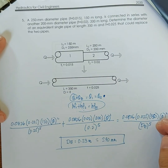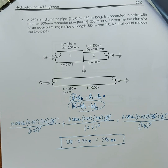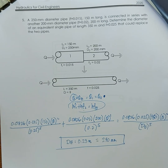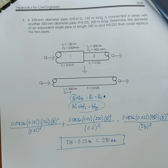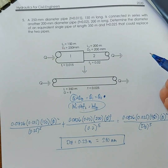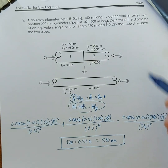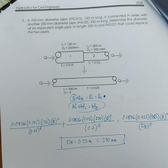That is the answer for problem number five. When applying the concept of equivalent pipes, we simply equate the discharges and the head losses: the discharge and head loss of the original pipe system must equal those of the equivalent pipe.